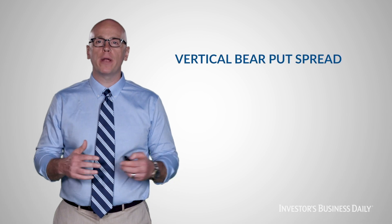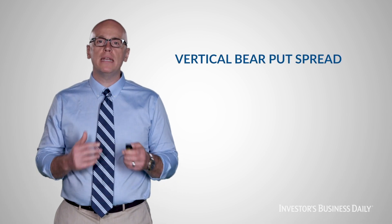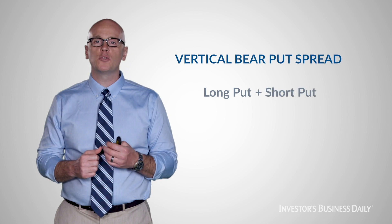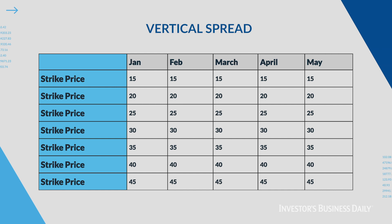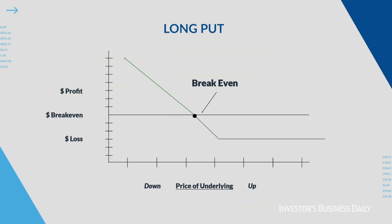In this video we're going to talk about the bear put spread. We've talked about the bull call spread as a way for mildly bullish investors to take advantage of the underlying stock's movement while controlling risk and limiting their cost basis. Today we're going to do the same thing with puts. A vertical bear put spread is the combination of a long put as well as a short put. On our options chain, we draw a vertical line between the two to connect them — that's why it's called a vertical spread.